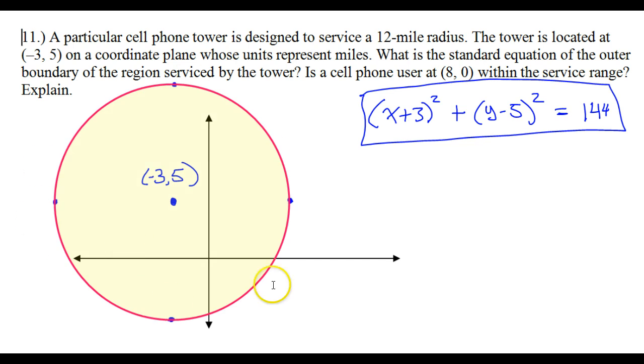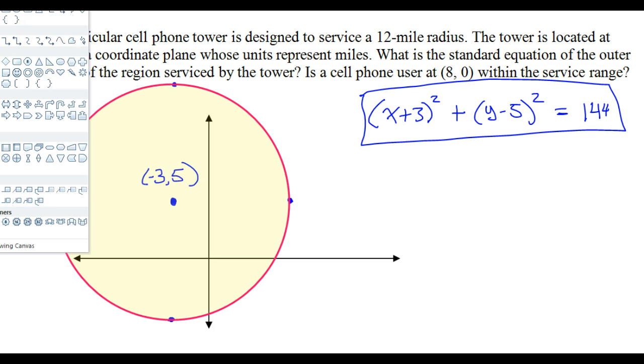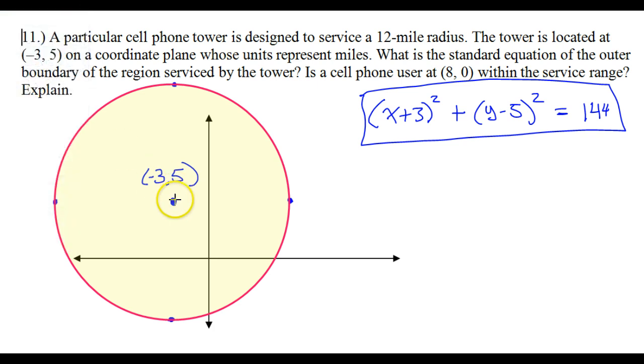And this circle would represent the service area at this center with a 12-mile radius. So we're saying that, for example, I'll just put it diagonally. I could have put it anywhere. This distance is a distance of 12 miles in every direction.